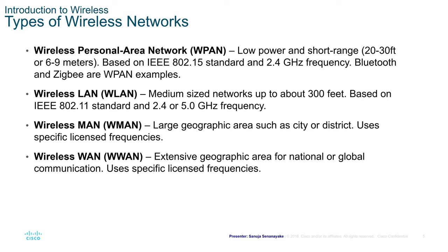Wireless MAN, also known as WMAN, covers a large geographic area such as city or district networks and uses specific licensed frequencies. Wireless WAN, or WWAN, covers an extensive geographic area for national or global communication systems and also uses specific licensed frequencies.